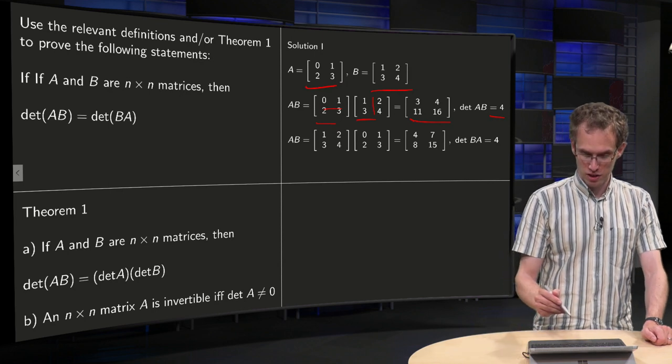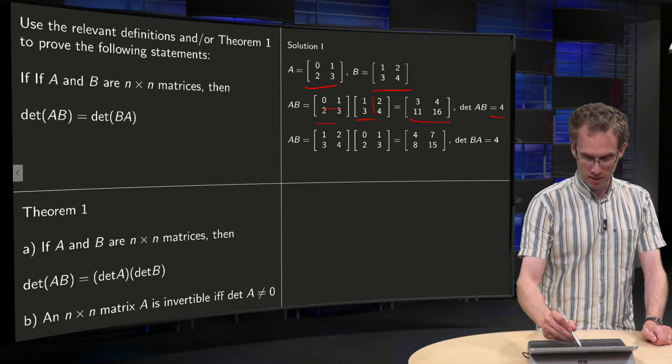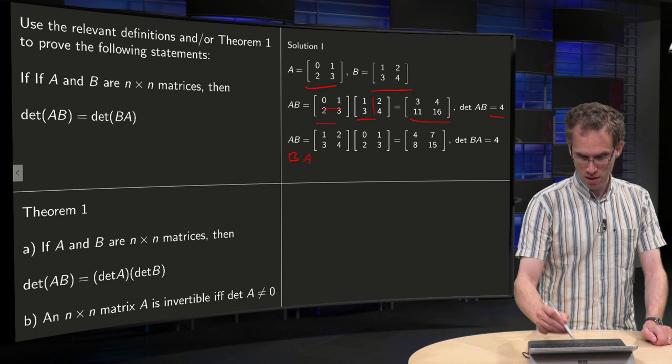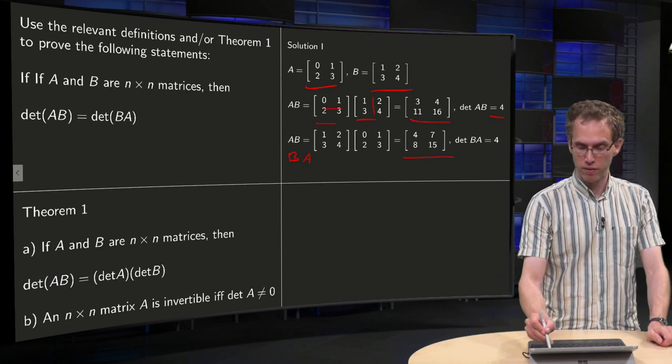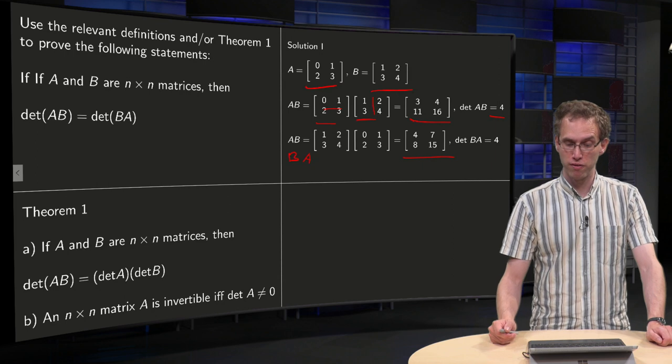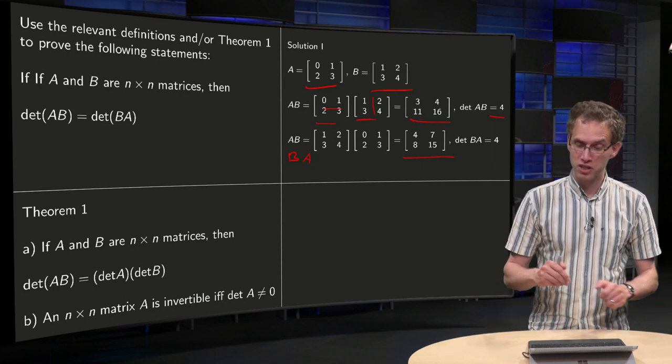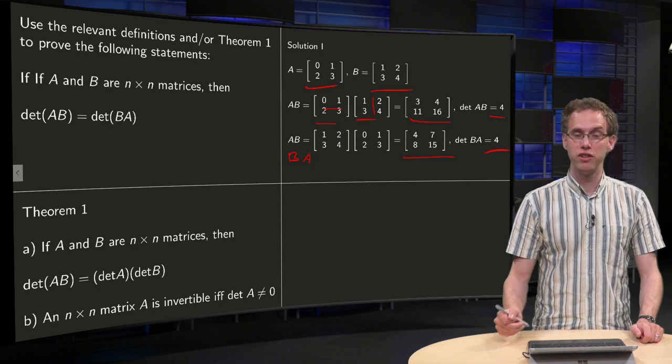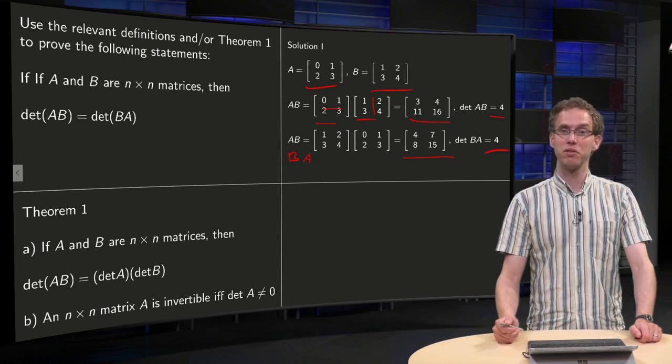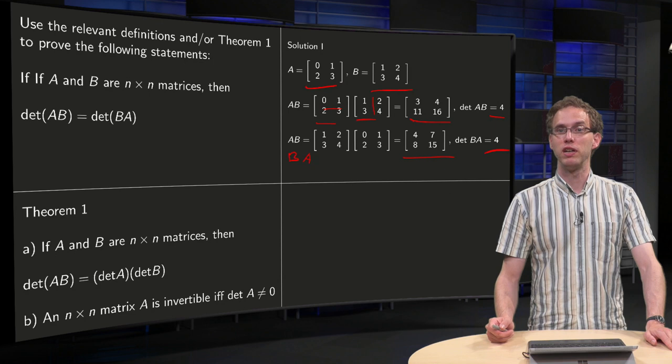And similarly, this should be BA. You can compute the determinant of A. You can compute BA over here. Determinant equals 4 times 15 minus 7 times 8, 60 minus 56 equals 4 again. So the determinant of AB equals the determinant of BA. So that will be the correct solution.